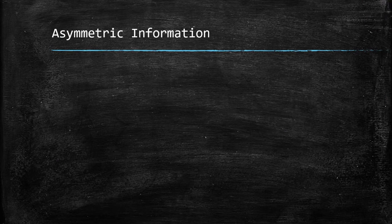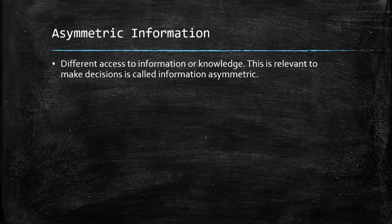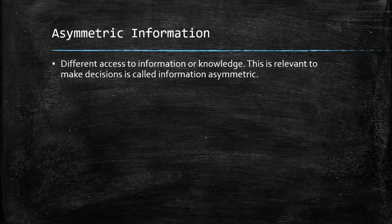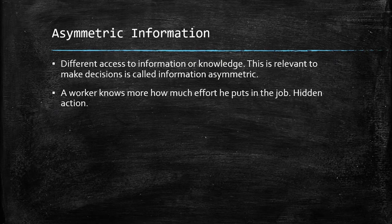Now we're going to develop the idea of asymmetric information. People have different access to information or knowledge, and this is relevant for making decisions. For this reason, it's called asymmetric information. Let's go to some examples to better understand this point.